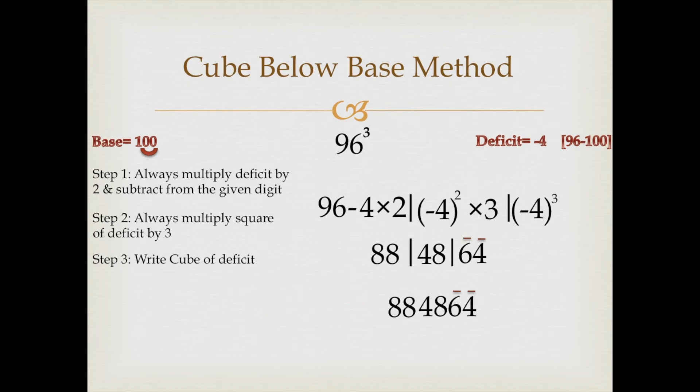As per the method, subtract the last digit with 4 bar from 10. 10 minus 4, 6. 9 minus 6, 3. And the predecessor of the rest of the digit. And we would have 884736 answer.